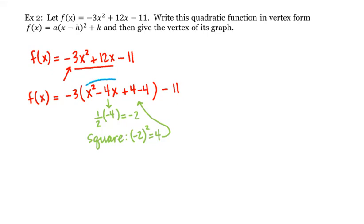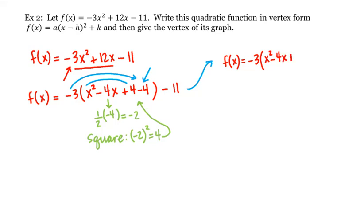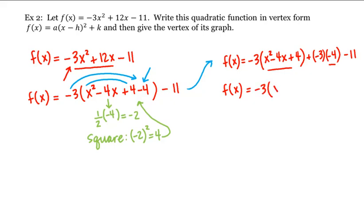The first three terms form a perfect square, but we need to get the -4 out of the parentheses by multiplying it by -3. So f(x) = -3 times the first three terms, plus -3 times -4, minus 11. We distribute the -3 to get f(x) = -3(x - 2)² + 12 - 11.